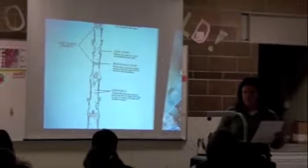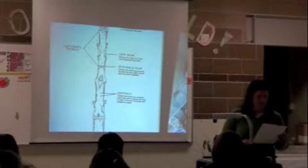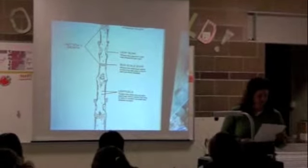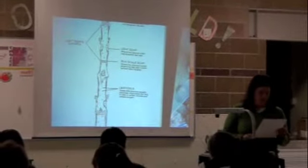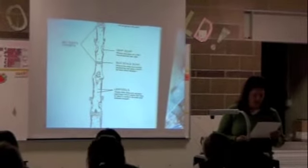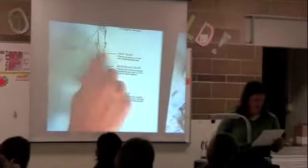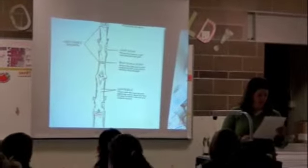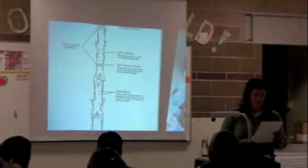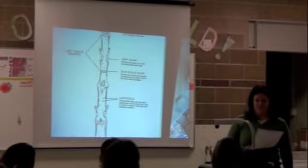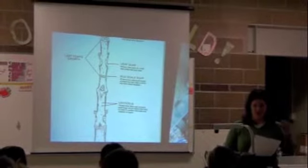On some twigs, leaf scars are really big and obvious, and sometimes they're really tiny — they differ for each kind of tree. They have tiny dots, or bundle scars, which are at the end of the veins that transported food and water between the leaf and the twig. They may form a pattern or resemble a face, like in the walnut and butternut twigs — they look like faces on there.